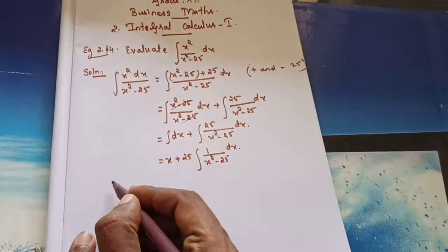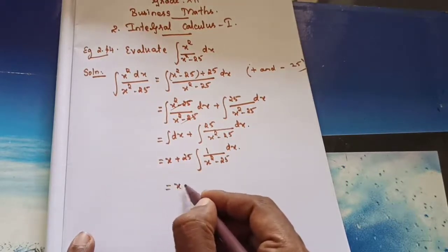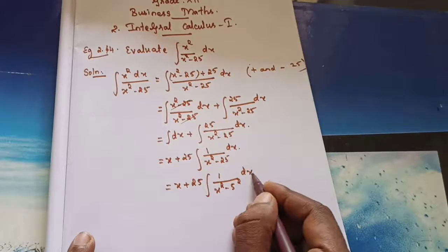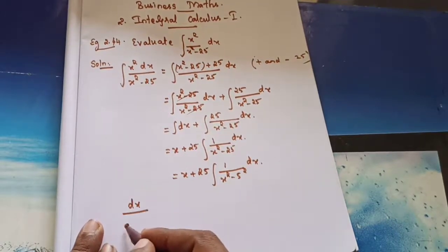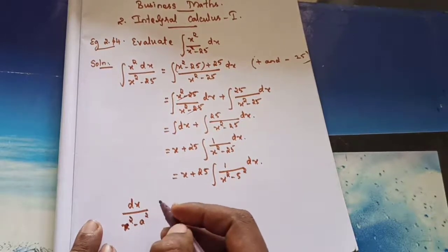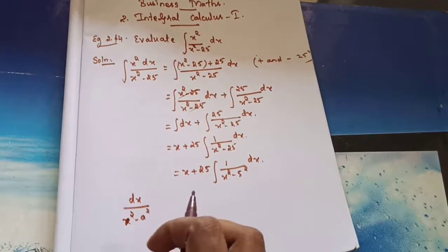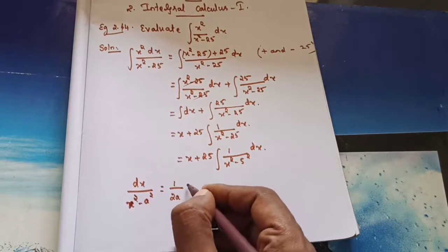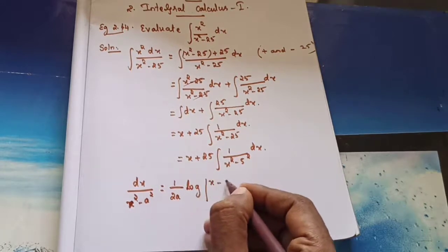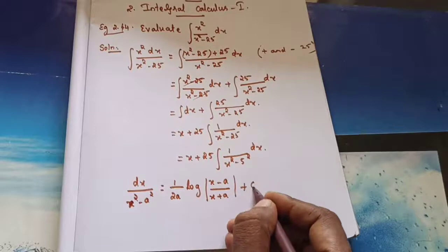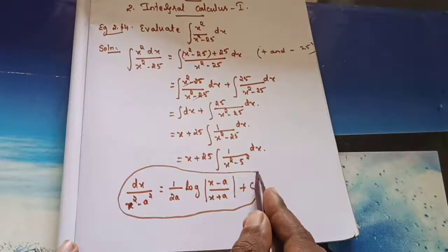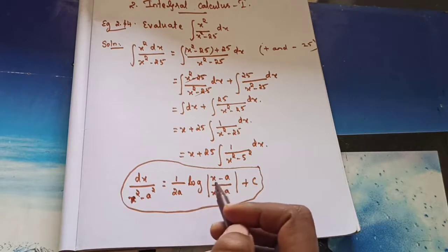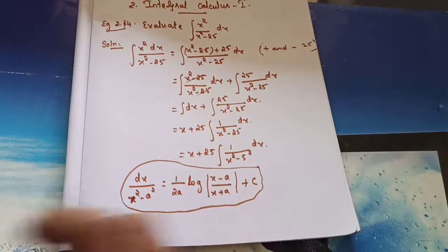You know the formula for this. We can change 25 as 5². So that is equal to x plus 25 times integral of 1/(x² minus 5²) dx. The formula for dx/(x² minus a²) that we learned last class is: 1/(2a) times log|( x minus a)/(x plus a)| plus C.